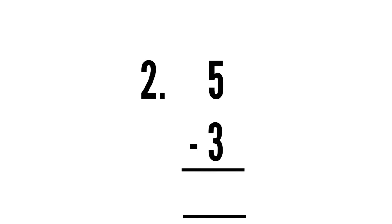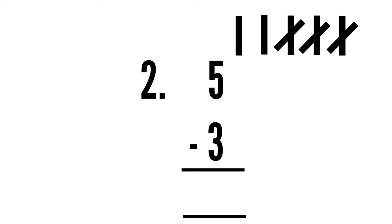Yes, five is the bigger number. Now you have to draw five vertical lines: one, two, three, four, five. How many lines do you have to cross out? Three: one, two, three. Now count the leftover lines: one, two. Five minus three is two.